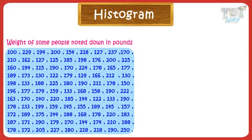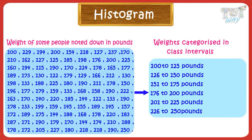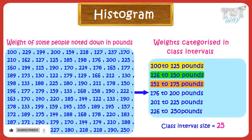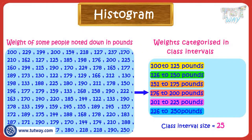Let's learn more using some examples. The weight of some people was noted down. Weights were in the range from 100 to 250. So small class intervals or categories can be made. Each category or class interval is the same size — here, each class interval is 25 in size: 100 to 125 pounds, 126 to 150 pounds, 151 to 175 pounds, 176 to 200 pounds, 211 to 225 pounds, and 226 to 250 pounds.